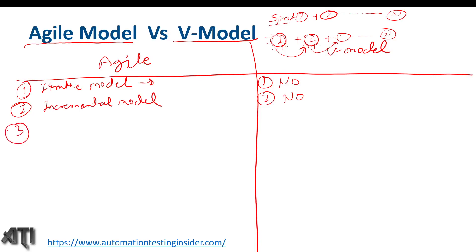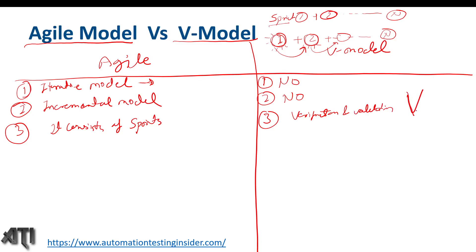The third difference: agile consists of sprints, while V model consists of verification and validation. Verification is also called the development cycle or developer's life cycle, and validation is the testing cycle or tester's life cycle. So in V model we have two main phases: verification and validation, whereas in agile it is based on sprints.